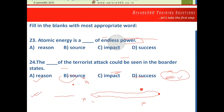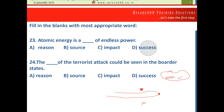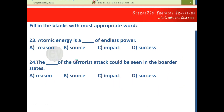A simpler fill-in-the-blanks question: 'Atomic Energy is a dash of endless power' — options are reason, source, impact, success. The answer is 'source.' Second: 'The dash of the terrorist attack could be seen in the border states' — options are reason, source, impact, success. 'Source of the terrorist attack' doesn't fit well here. The correct word is 'impact' — the impact of the terrorist attack could be seen in the border states. So the answers are 'source' and 'impact' respectively.